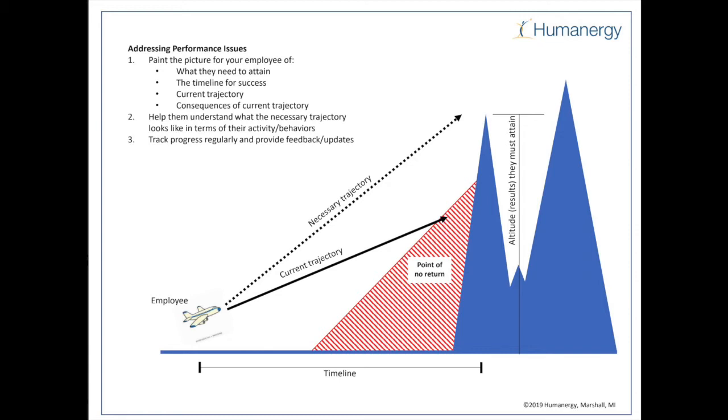Help them understand what a necessary trajectory looks like in terms of their activity and behavior, then track their progress regularly and provide feedback. There's going to come a point where they're in what I call a zone of no return - they're so close to the mountain, they're not capable of getting the lift to get over it. That's the point we know something has to change.